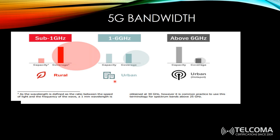The choice of frequency depends on coverage needs. If you need deeper coverage, you use sub-1 GHz — most commonly 700 MHz — giving very strong coverage but limited capacity due to limited spectrum availability. Using 1 to 6 GHz or sub-6 GHz gives fair coverage and fair capacity, typically deployed in urban areas at 3.5 GHz. Millimeter waves above 6 GHz provide very high capacity with wider spectrum but limited coverage, and are used in hot spots.